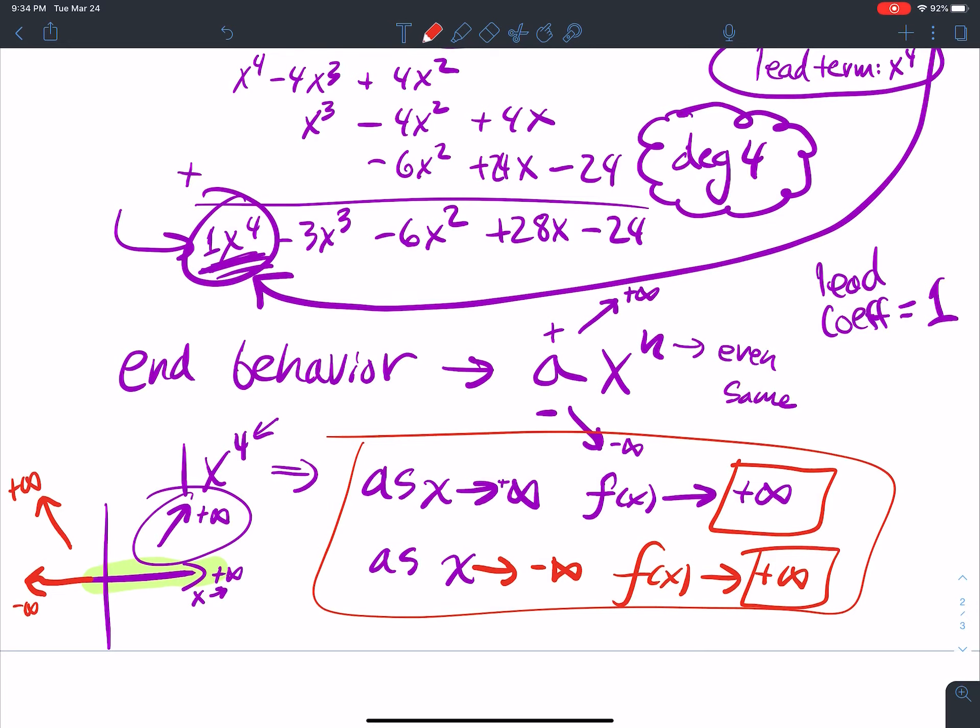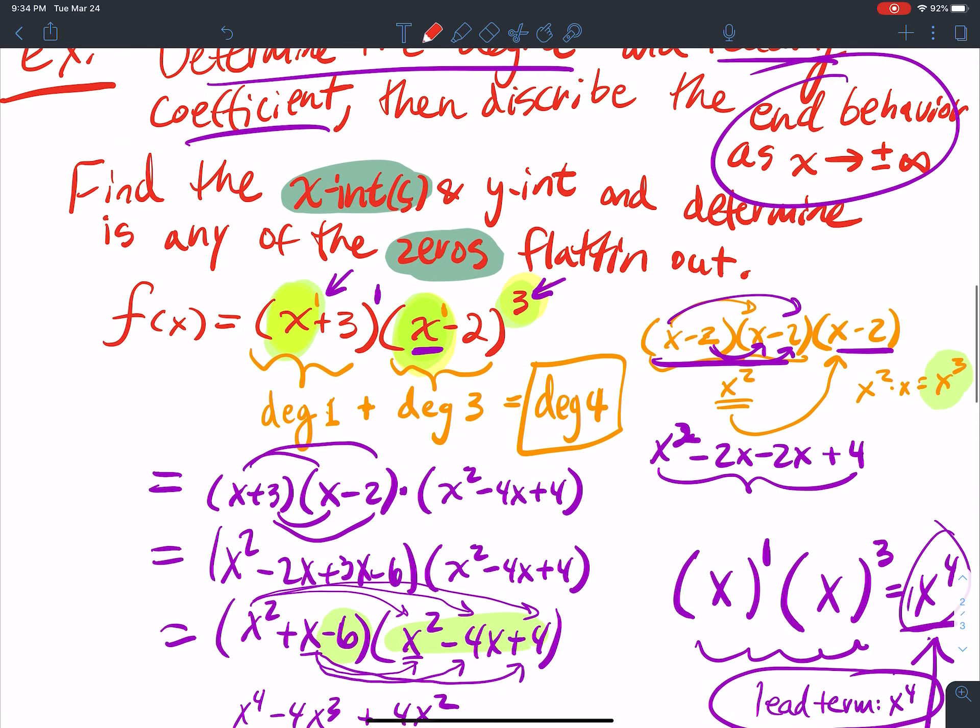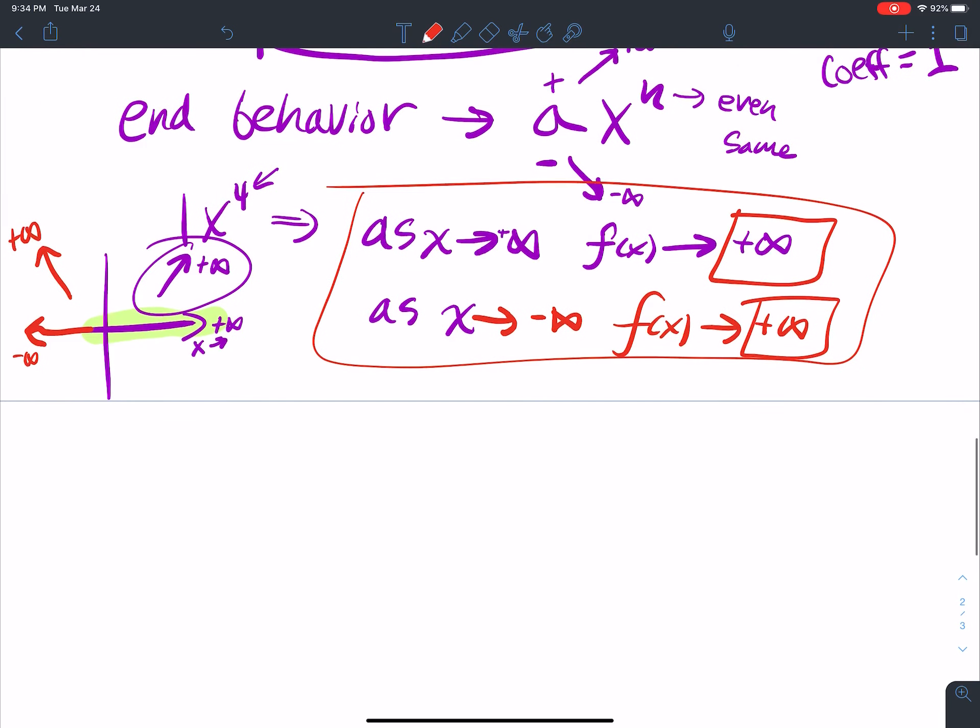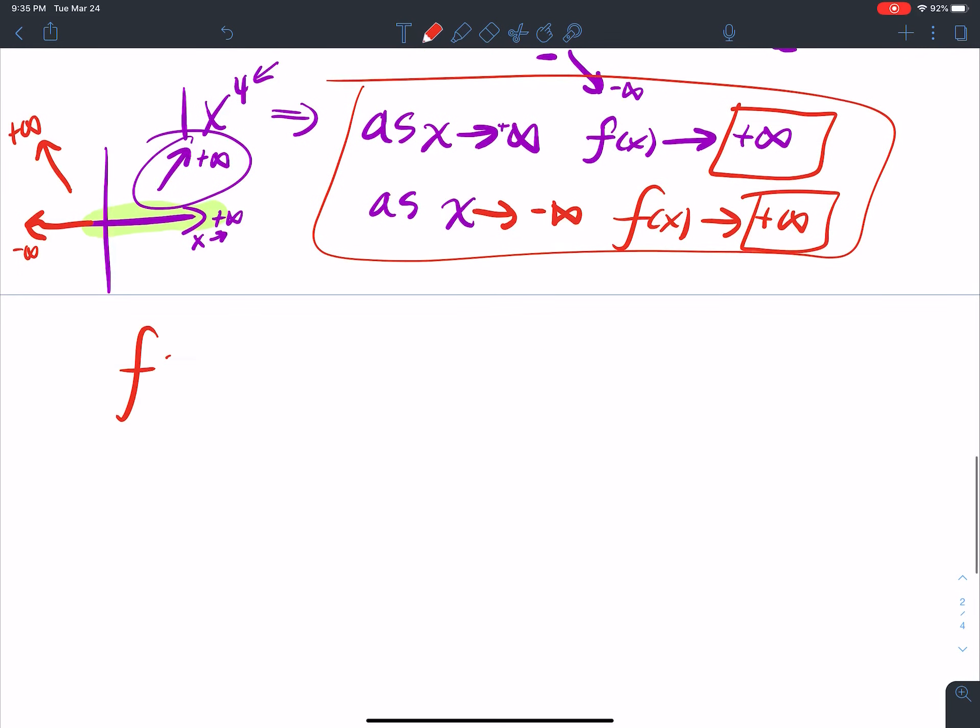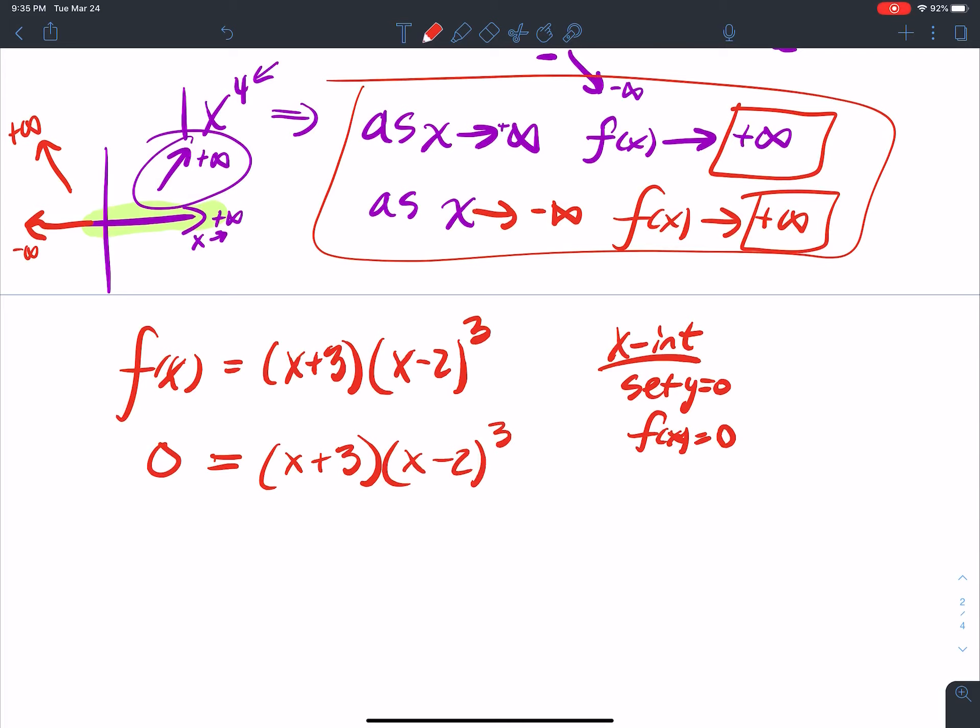All right, cool. I also want to know any x-intercepts, y-intercepts, and then zeros that flatten out. So let's take our function f(x) equals x plus 3 and then x minus 2 cubed. To find the x-intercept, I set y equal to 0. Y here is f(x). So f(x) set equal to 0. So I put a 0 for f(x). And then I try to solve for x to get my x-intercepts. So to solve for x, I set each piece equal to 0.